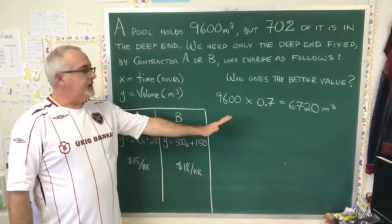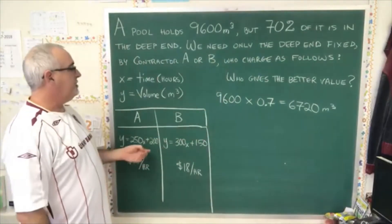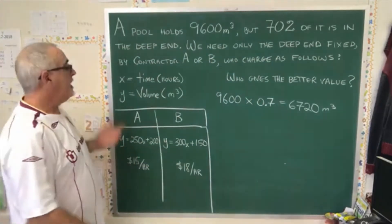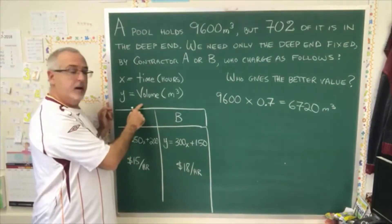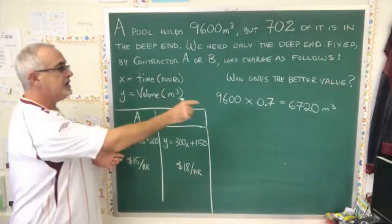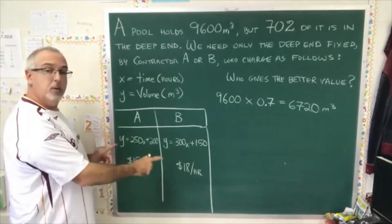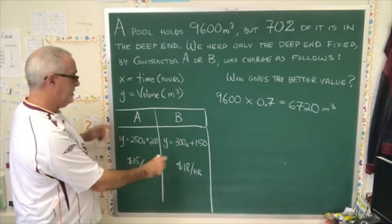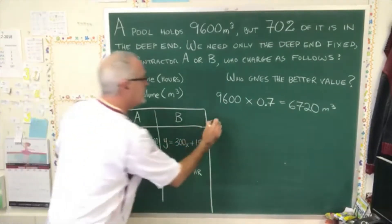So it is the 6720 meters cubed that has to be plugged into the equation. And that's a Y. It is the Y that is the volume in meters cubed. So we're plugging 6720 into both equations, but in the Y position. Let's do contractor A first.